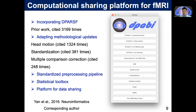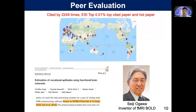Today I do not have enough time to talk about my work on addressing head motion artifacts, on adjusting stabilization, or on addressing multiple comparison corrections. If you're interested, you can read our ESI top highly cited papers. We have standardized pre-processing, a statistical toolbox, and a platform for data sharing — all included in one, called DPABI, published in 2016 in Neuroinformatics. This toolbox has been cited more than 2,200 times. It is an ESI top 0.01% highly cited paper, with users including Seiji Ogawa, the inventor of BOLD fMRI.